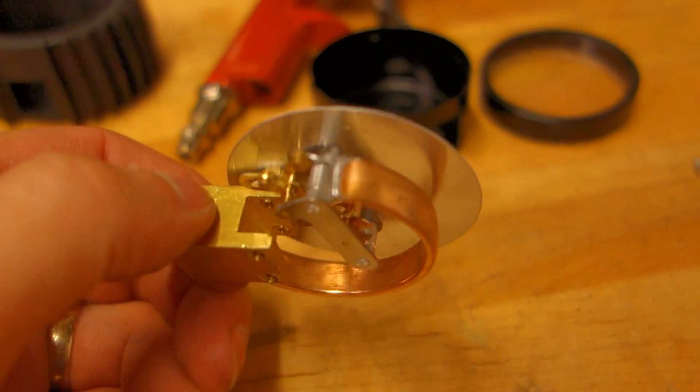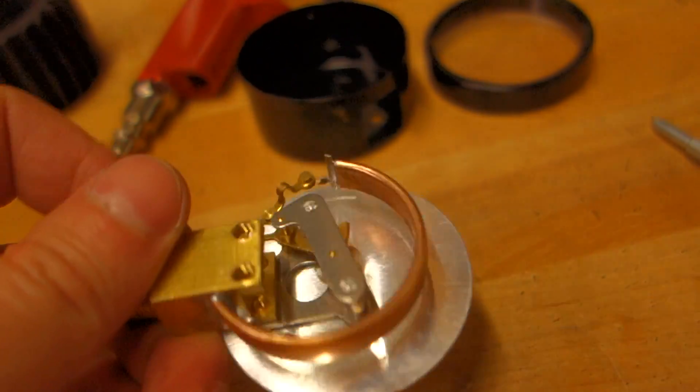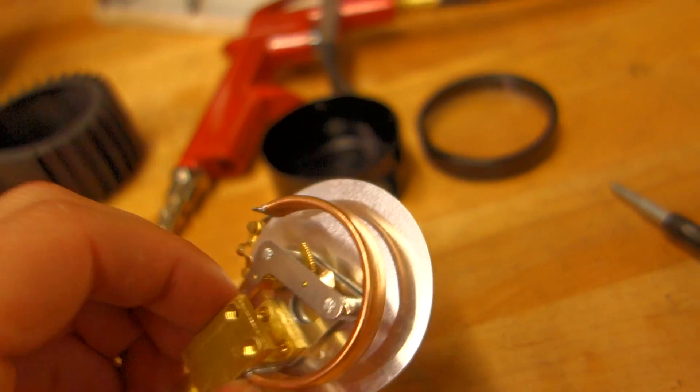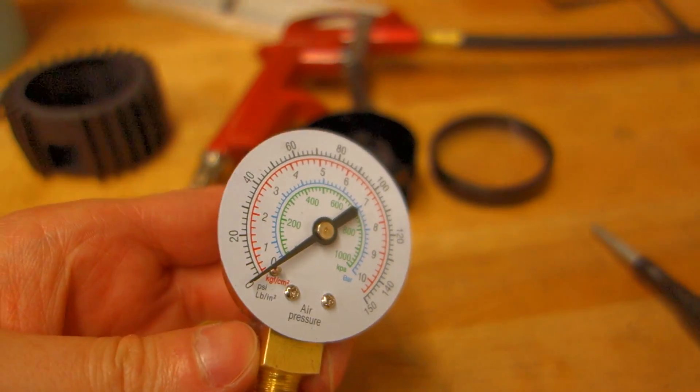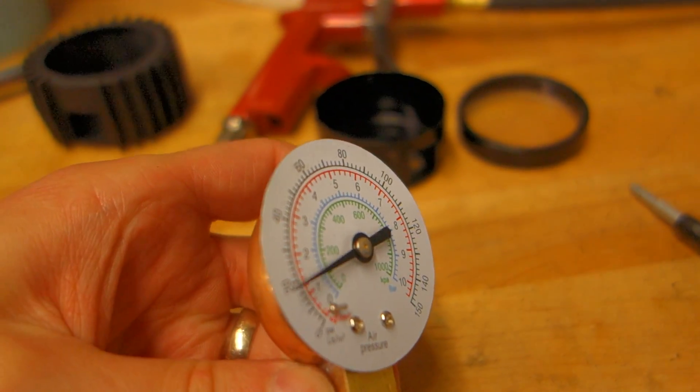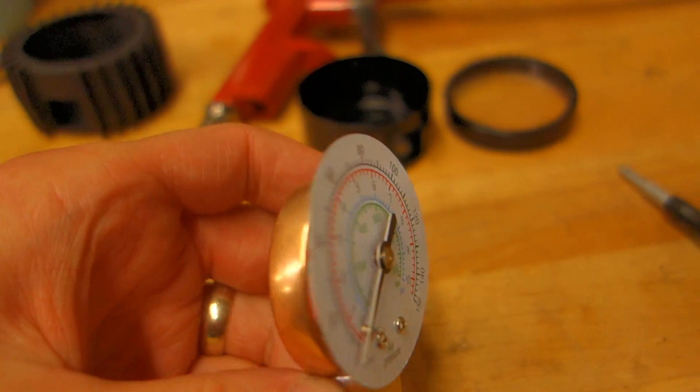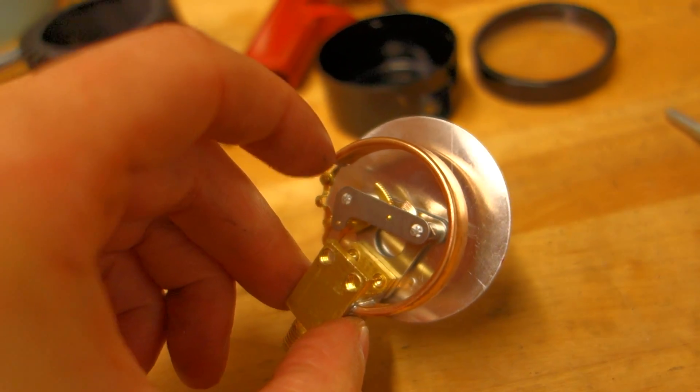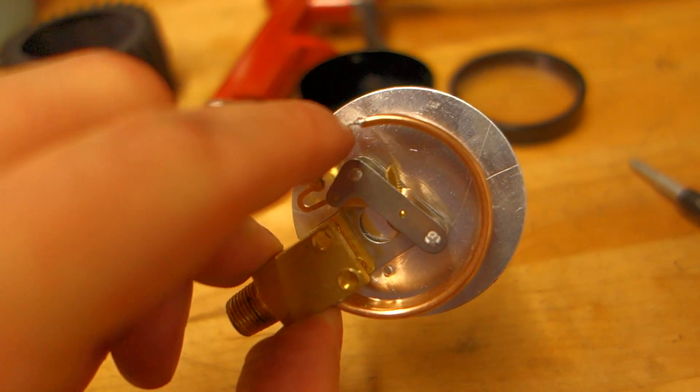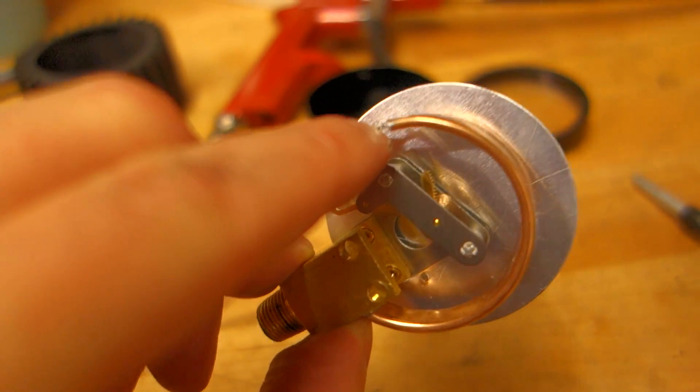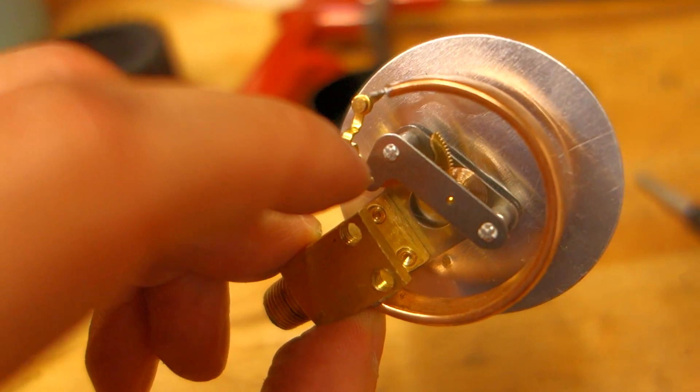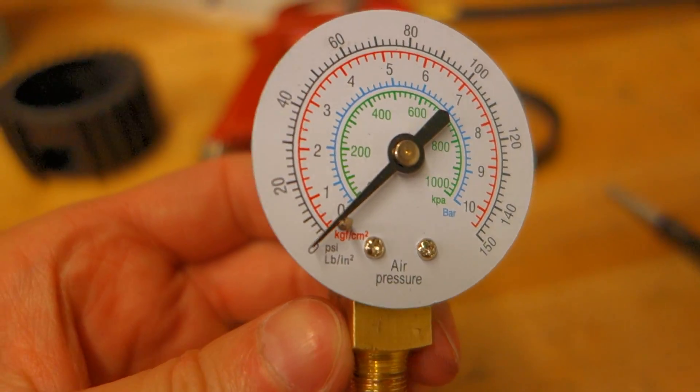So what's going on here is, as the air pressure increases inside the gauge this thing expands, which I'll explain in a minute. There's a little geared arm that moves in and out and that will move the dial on the front.